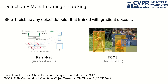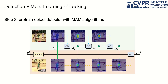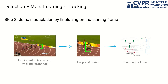Given this pre-training and fine-tuning pipeline, it's easy to transform a detector into a tracker in three steps. Step 1: pick up any object detector trained with gradient descent — in this work, we use RetinaNet and FCOS. Step 2: pre-train the detector with meta-learning on a large dataset. Step 3: when the user gives the tracking target, construct the training data and fine-tune the detector.